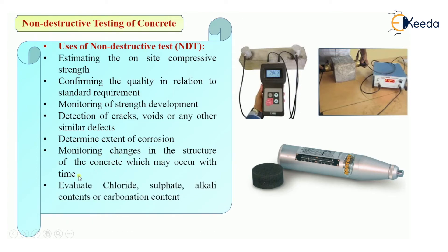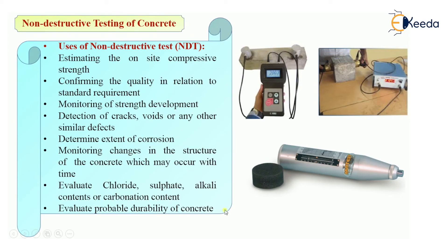Last, we can evaluate chloride, sulfate, alkali contents, or carbonation content — we can monitor whether there is chloride attack, sulfate attack, alkali attack, or carbonation process going on in the concrete. We can also evaluate the probable durability of concrete — meaning how much will be the lifespan or durability of concrete. These are the uses of NDT.